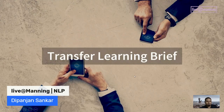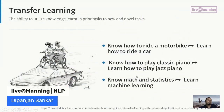A brief about transfer learning. The whole concept is the ability to utilize knowledge learned in prior tasks into new and novel tasks. For example, if you know how to ride a motorbike, it'll be easier to learn how to ride a car by leveraging that pre-learned knowledge. Similarly, if you want to learn machine learning and have a solid foundation in math and statistics, you'll learn it much better and faster.